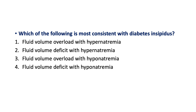Another question: Which of the following is most consistent with diabetes insipidus? The correct answer is fluid volume deficit with hypernatremia. Remember — DI, less letters, less water in the body, with hypernatremia because the blood is too concentrated. So the correct answer is number 2: fluid volume deficit with hypernatremia.